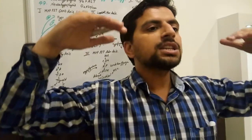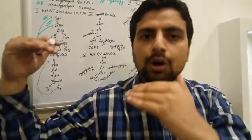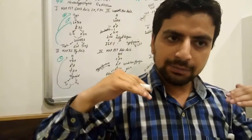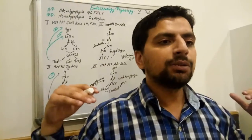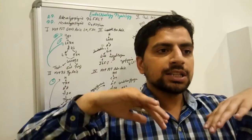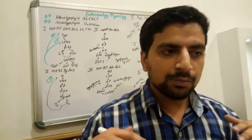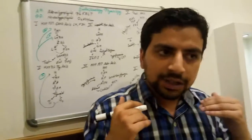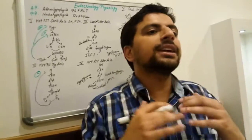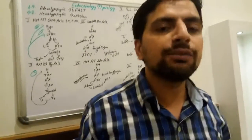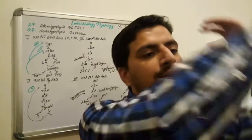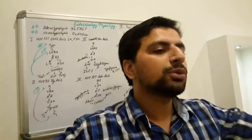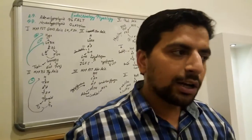Hypothalamus releases thyroid releasing hormone, then the anterior pituitary releases thyroid stimulating hormone, which goes to the thyroid gland. The thyroid gland releases T3 and T4, and then provides a feedback signal to the hypothalamus not to release more thyroid releasing hormone.